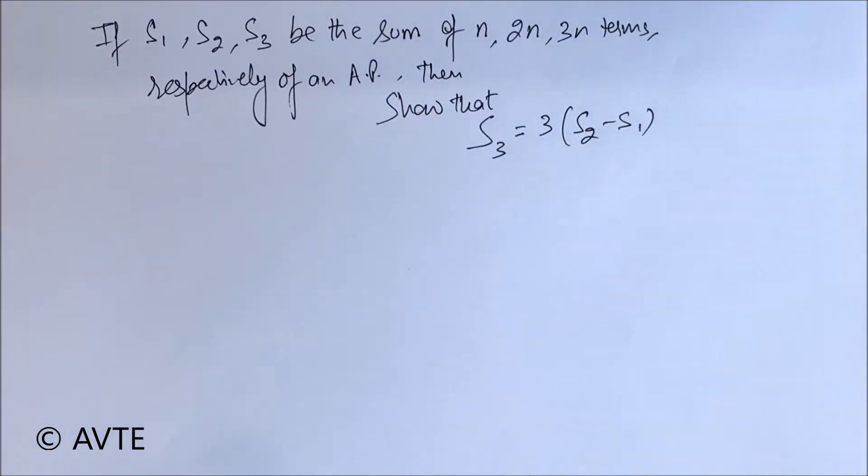Here this is one AP, so for that one AP, we have taken the sum up to n terms and we are calling that as S1. For the same AP, when we are taking the sum to 2n terms, we are calling it S2. And for 3n terms, the sum is becoming S3 and the target is to prove S3 is equal to 3 times S2 minus S1.